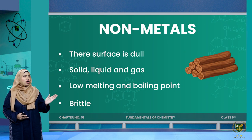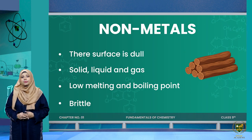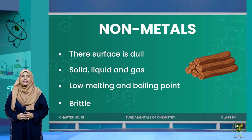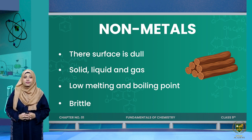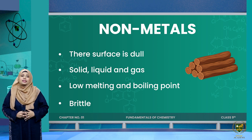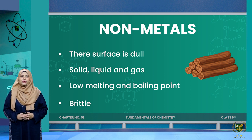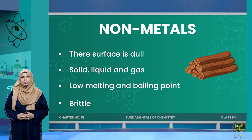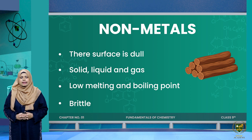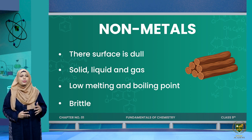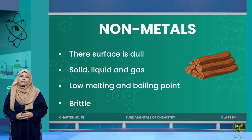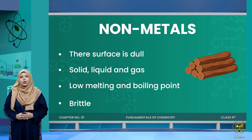Now if we look at non-metals, they are of course going to be opposite of metals. If metals were shiny, non-metals have a dull surface. Non-metals can exist in solid, liquid, and gas states — some are solids, some are liquids, and some are gases. The melting points of non-metals are very low — for example, plastic is a non-metal.